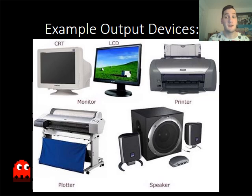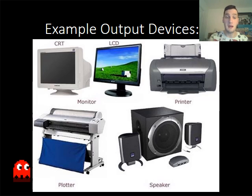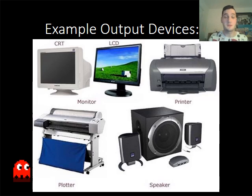Some output devices include monitors — you have the old CRT monitor, which some of you may still see around, and an LCD screen. You will also see printers and plotters, which plot graphs on paper; you tend to see these used more in contexts like earthquakes so you can actually plot the movement. You also have speakers, and you can include headphones, which are very similar.